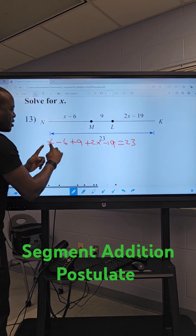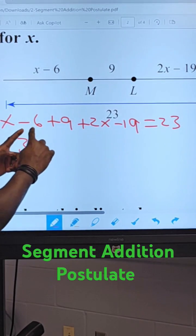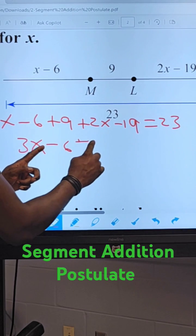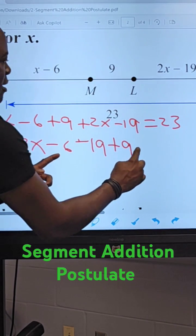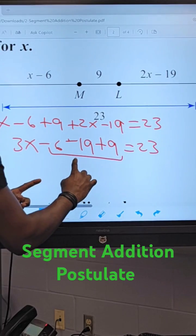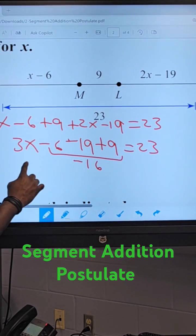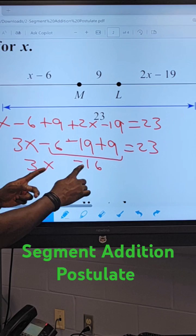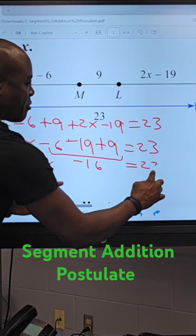Let's talk about like terms. We have 3x, and then we have minus 6, minus 19, plus 9, and this equals 23. For this part, we'll get negative 16. So we're looking at 3x minus 16 equals 23.